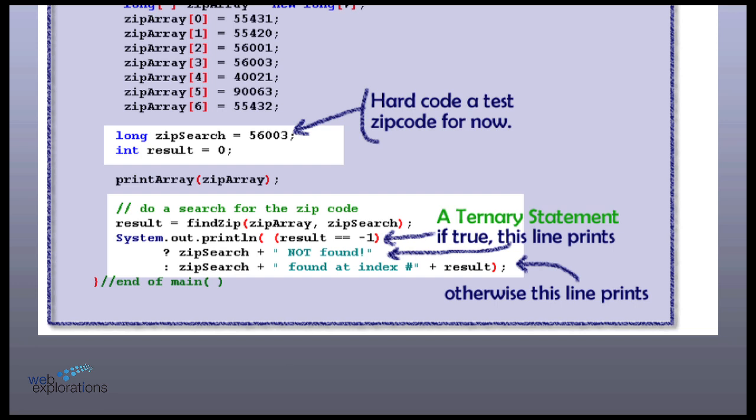So this later on is going to turn into an input statement. But for now, we're just going to hard code 56003. And you can see how I picked data that was right in the middle of my loop. So I'm going to search through my code. So I'm going to look for find zip. I'm going to pass in my array and my zip search.